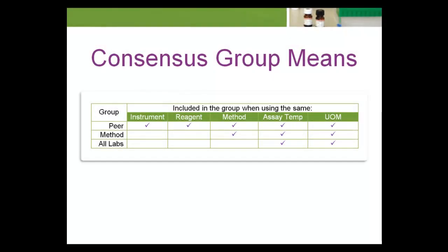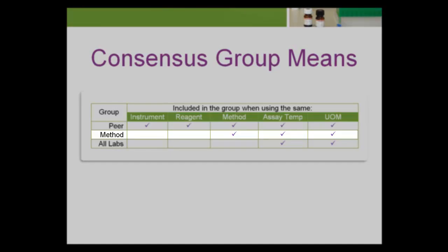The mean for the second consensus group, method, is calculated using analyte data from laboratories with the same method, temperature, and unit of measure. The mean from this comparison group is used when the peer group is too small for reliable statistical comparison.